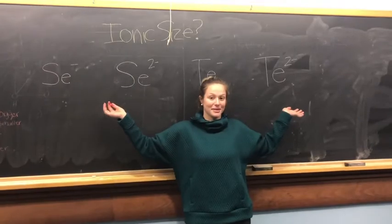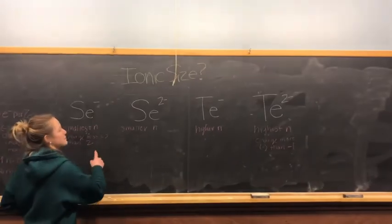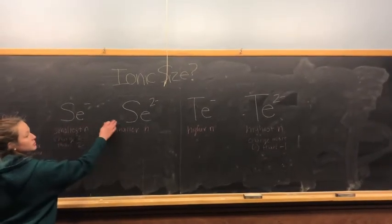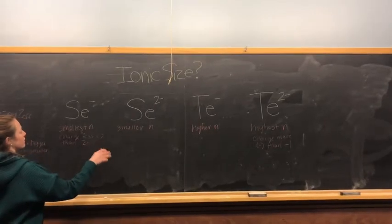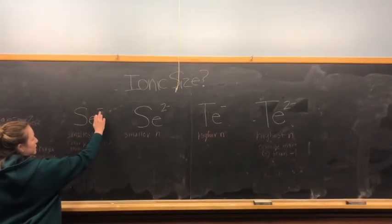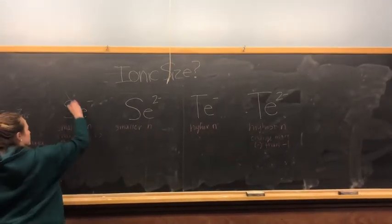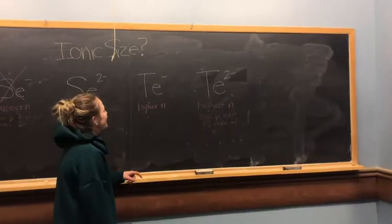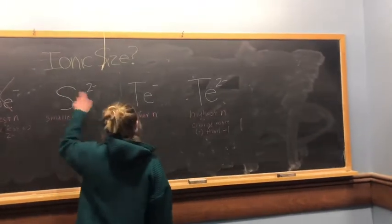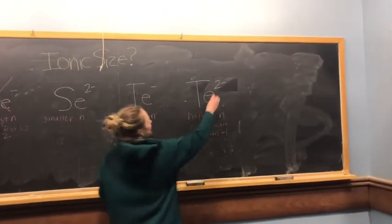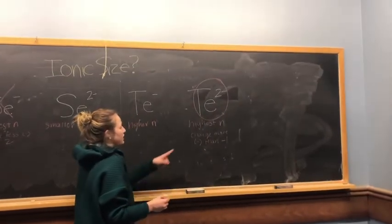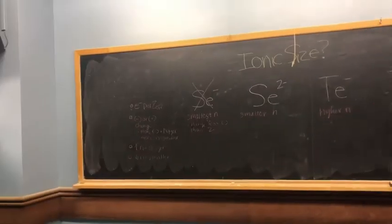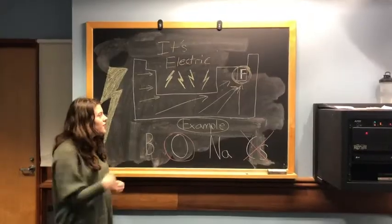Selenium has the smaller n between selenium and tellurium, so one of the selenium ions will have the least ionic size. Since a 1-minus charge is less negative than a 2-minus charge, the more positive one is smaller. Tellurium has the higher n and the most ionic size because its charge is more negative — and the more negative the charge, the bigger the ionic size.